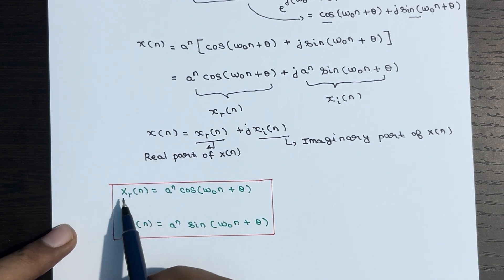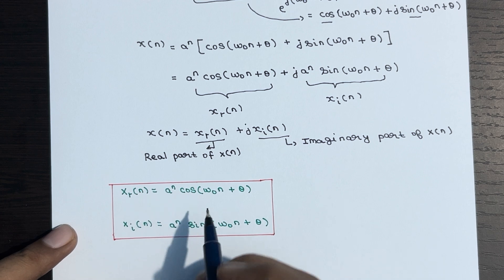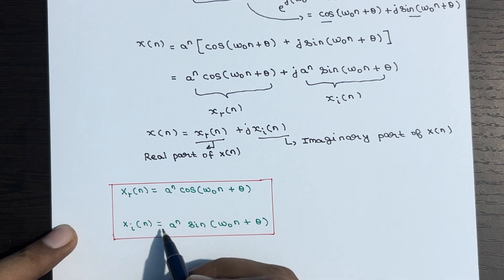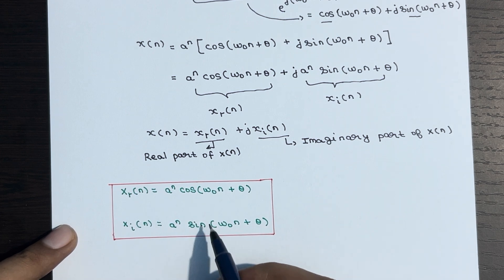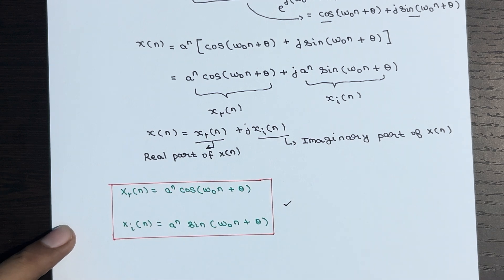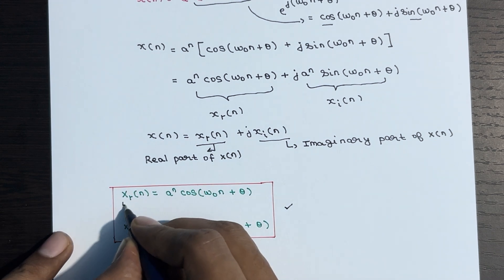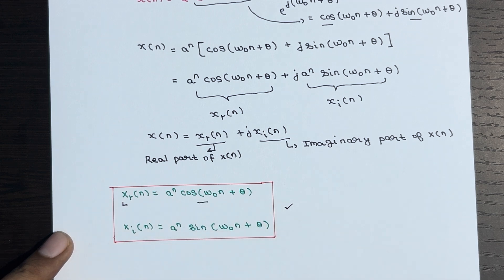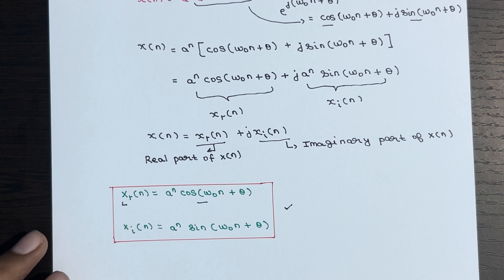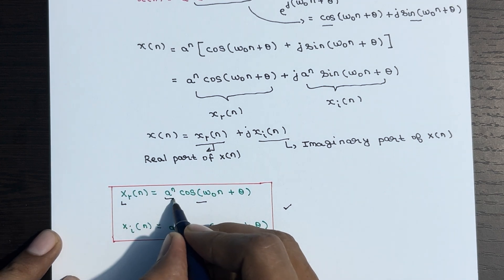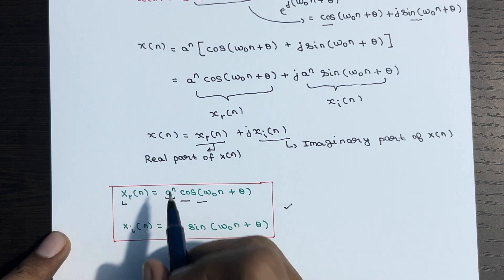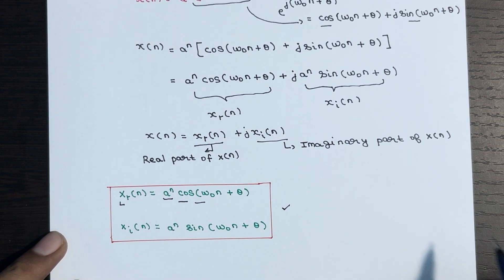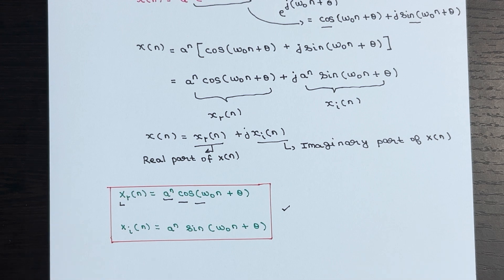To summarize: the real part xr of n is equal to A to the power n times cos(omega-naught n plus theta), and the imaginary part xi of n is equal to A to the power n times sin(omega-naught n plus theta). When we look at the real part of x of n, we see a cosine sinusoidal sequence that is either exponentially increasing or decreasing depending on the value of A. Let's now look at graphs for both the real and imaginary parts.